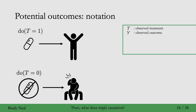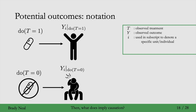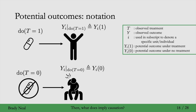This is the intuition for potential outcomes. We'll now get more precise with specific notation. We'll use do(T=1) to denote taking the pill and do(T=0) to denote not taking the pill. The outcome you would observe if you were to take the pill is Yi1, and the outcome if you were to not take the pill is Yi0. We can then define the causal effect as just the difference between these two potential outcomes.